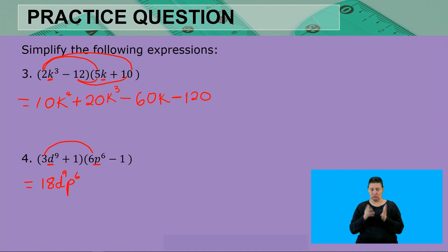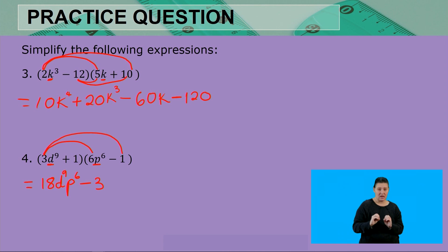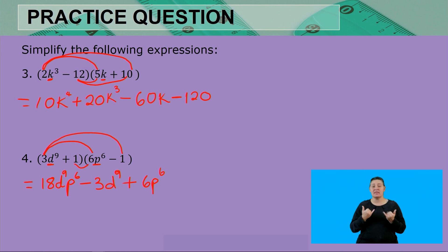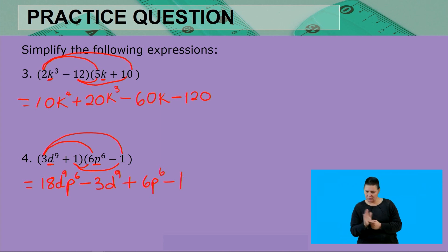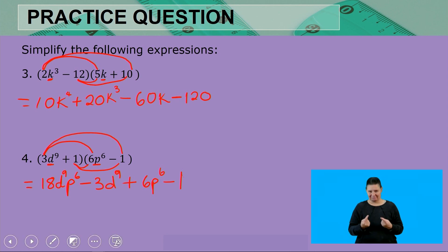Then 3d⁹ × (-1): 3 × 1 = 3, keeping d⁹ gives -3d⁹. Next, 1 × 6p⁶: 1 × 6 = 6, keeping p⁶ gives +6p⁶. Finally, subtracting: 1 × 1 = 1, giving -1. Checking for like terms — there are none — so the expression is fully simplified as far as we can go.